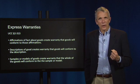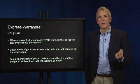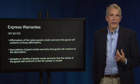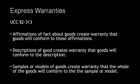Warranties, unsurprisingly, can also be expressed or implied. UCC Section 2-313 establishes three ways sellers of goods can create express warranties. First, any affirmation of fact the seller makes that relates to the goods being sold and becomes part of the basis of the bargain creates an express warranty that the goods will conform to that affirmation. Second, any description of the goods that becomes part of the basis of the bargain creates an express warranty that the goods will conform to that description. And third, any sample or model of the goods which is made part of the basis of the bargain creates an express warranty that the whole of the goods will conform to the sample or to the model.